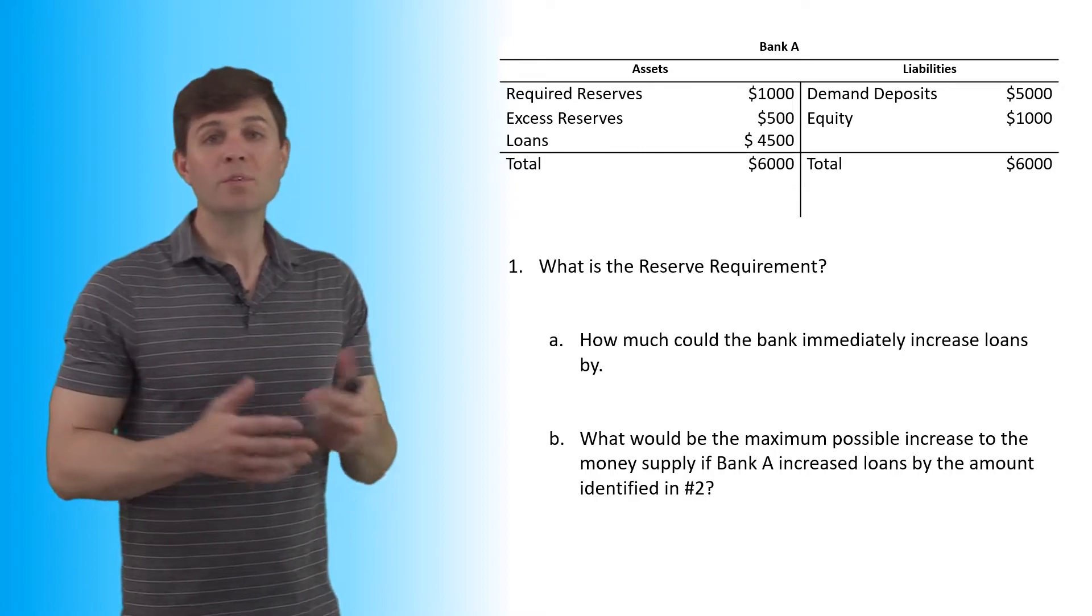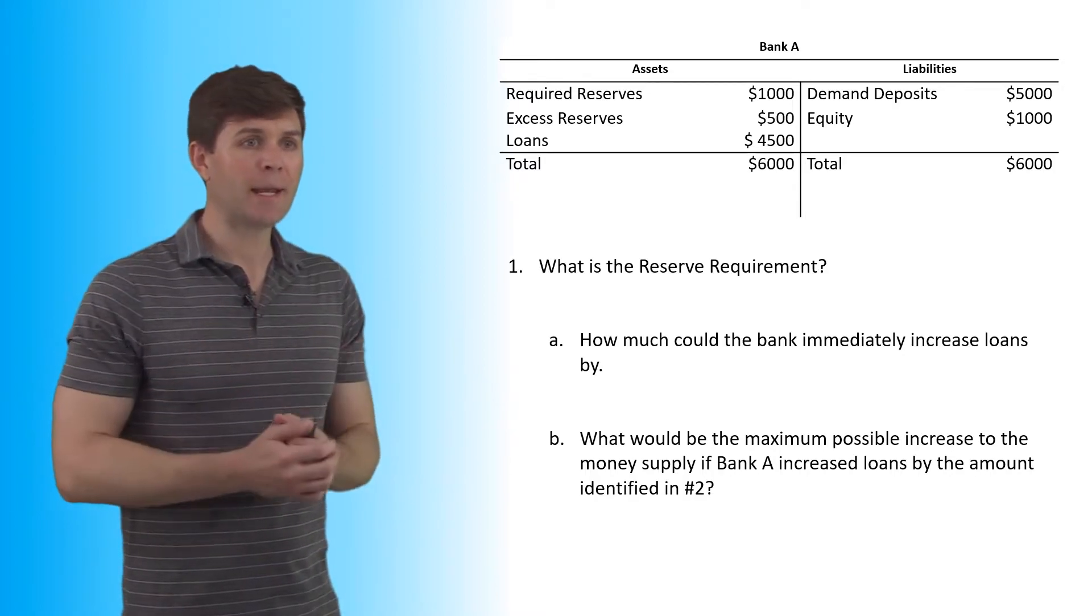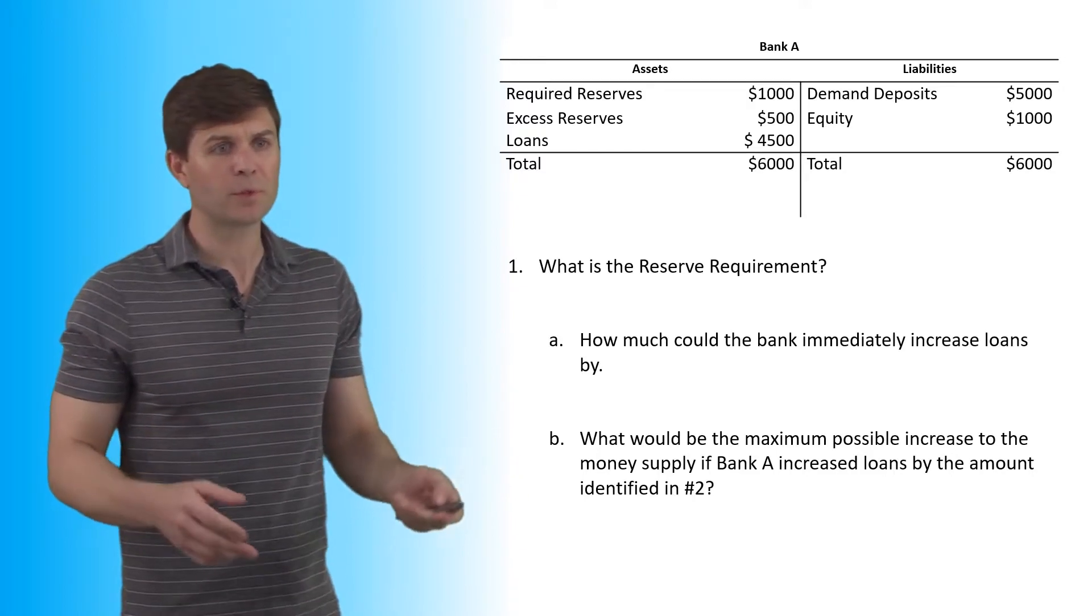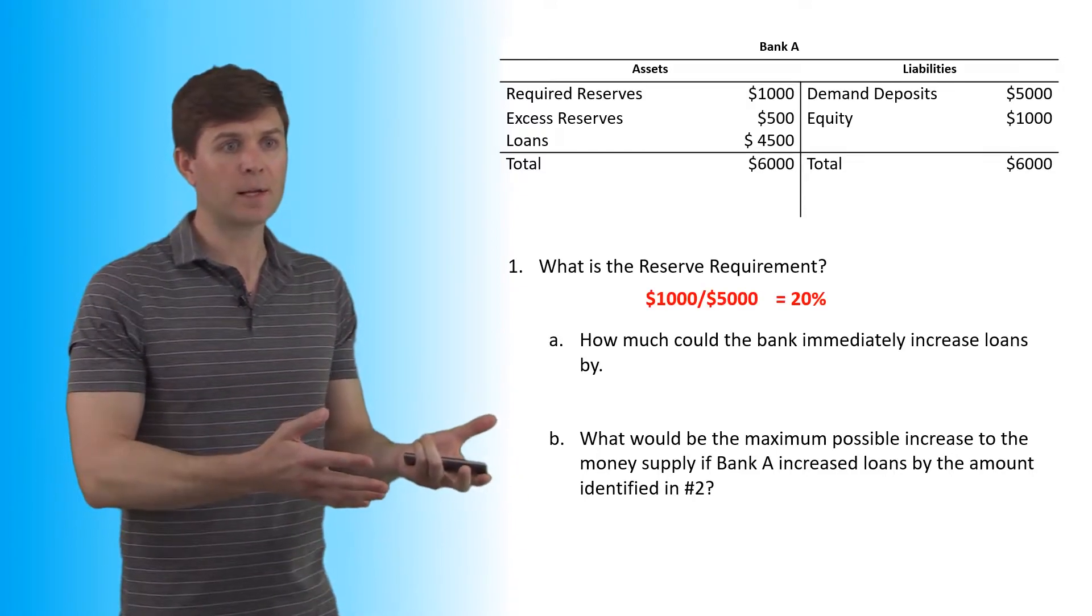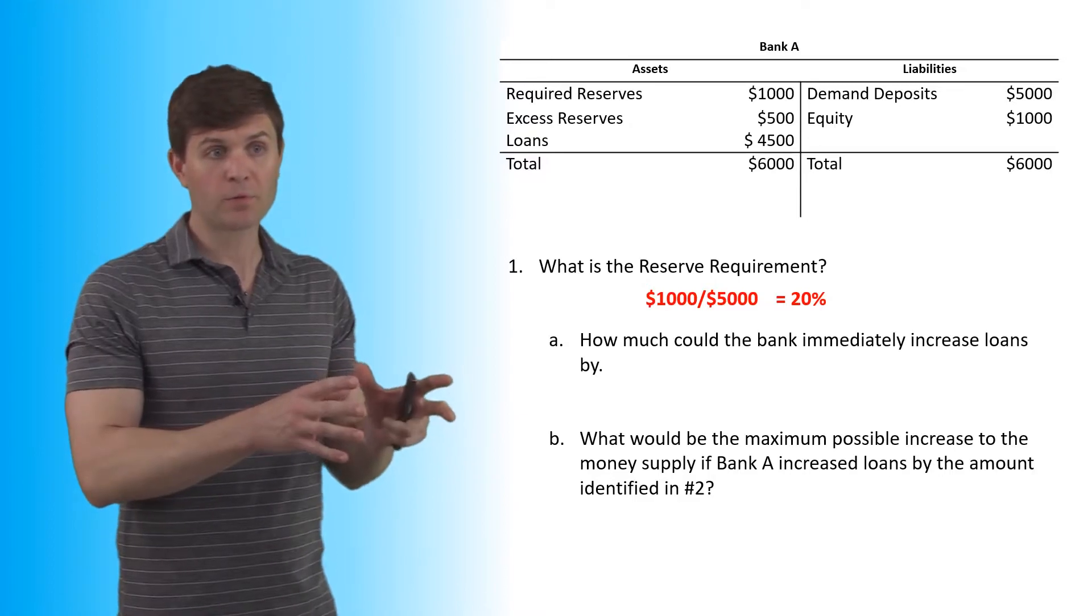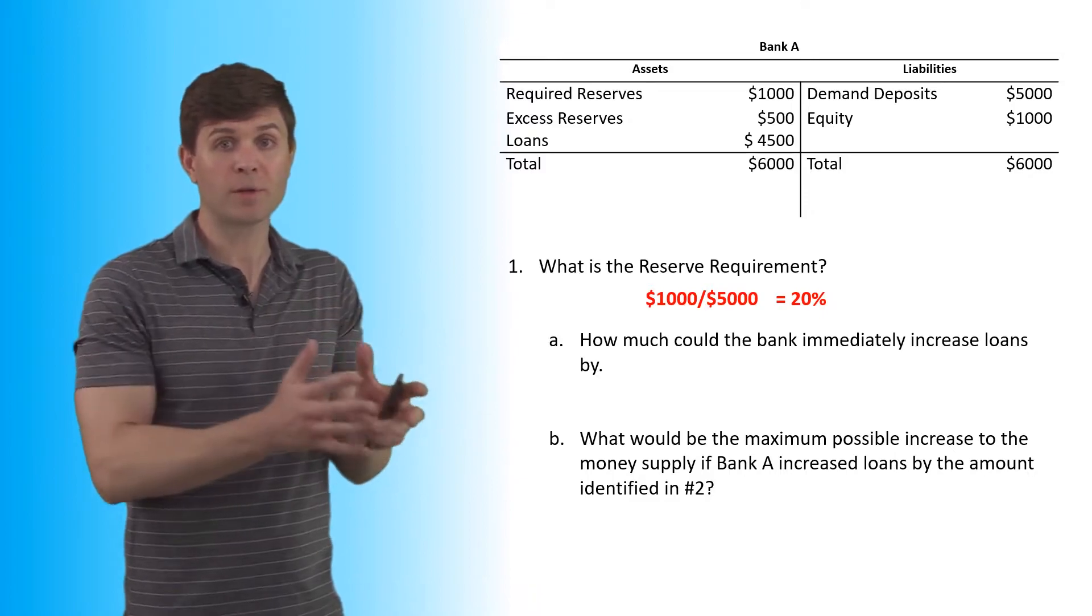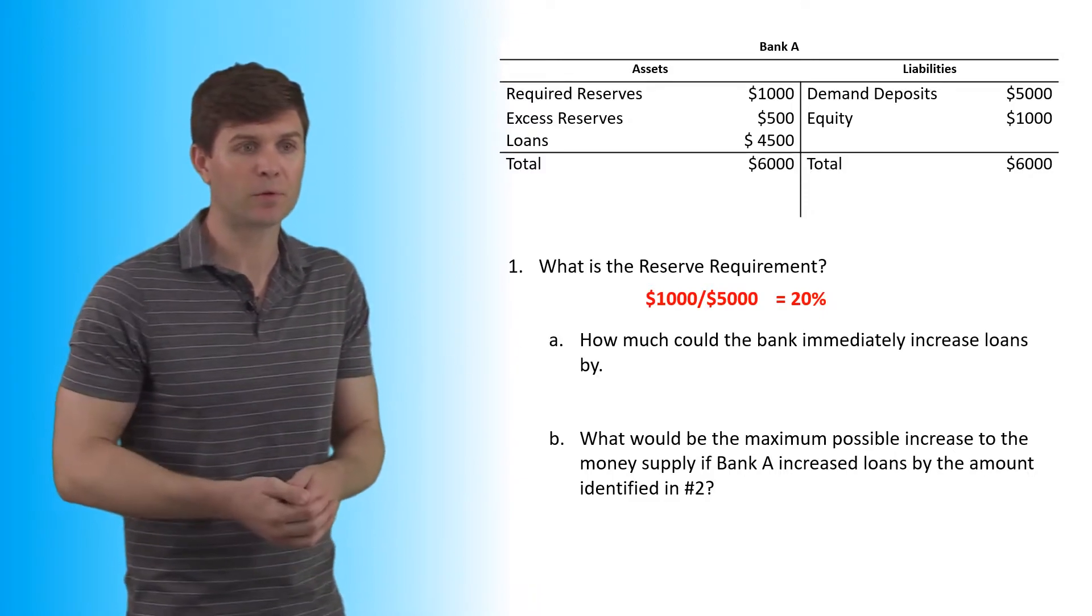All right, number one, what is the reserve requirement? We're looking at Bank A right here and we're trying to figure out the reserve requirement. The reserve requirement is really simple. All we're going to do is take the $1,000 required reserves, divide that by the demand deposits that we actually have and we're going to come up with 20%. We know that 20% of all deposits have to be put in required reserves.